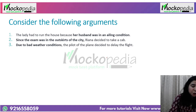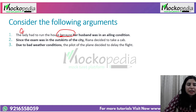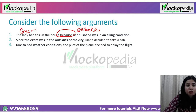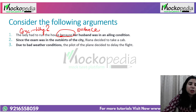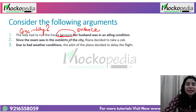Let's begin the discussion. 'The lady had to run the house because her husband was in an ailing condition.' We can identify 'because' as the premise indicator. Another way: whatever you identify as a conclusion, convert it into a why question and see if the other part of the argument answers it. 'Why did the lady have to run the house?' — Because her husband was in an ailing condition. That confirms our identification is correct.